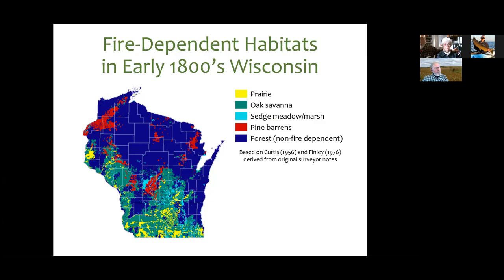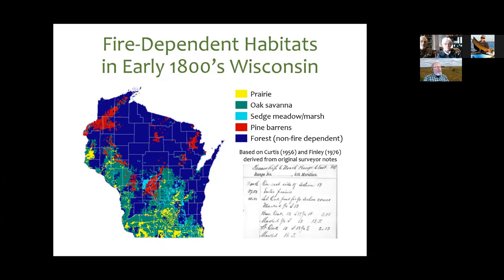Where there was not so much burning, succession would go all the way to forest, which is what we have in the northwestern half of Wisconsin now. For those who wonder how these maps were created — in the early 1800s, the U.S. government sent out surveyors to survey the land for settlement, and at each point along the survey grid the surveyors took very careful notes about what vegetation they were seeing.